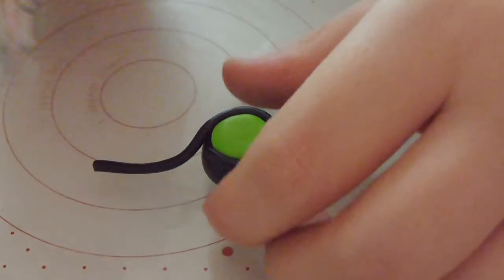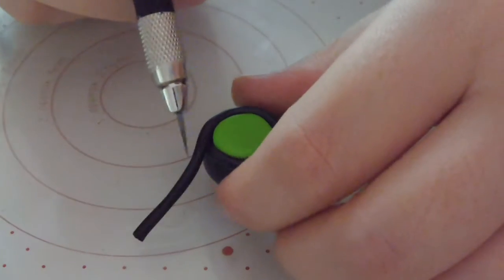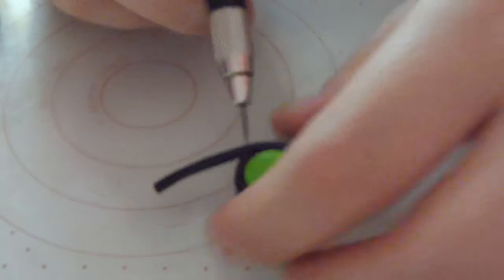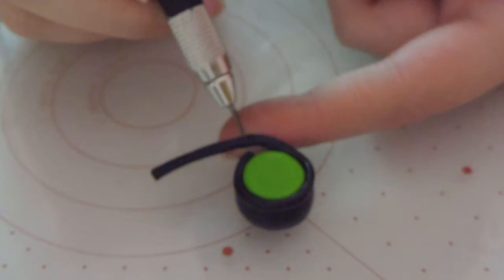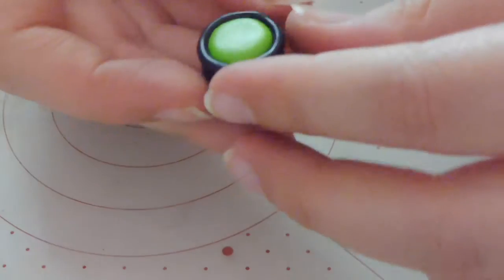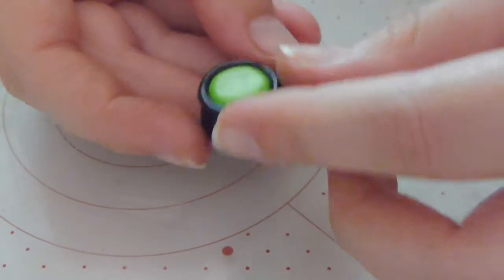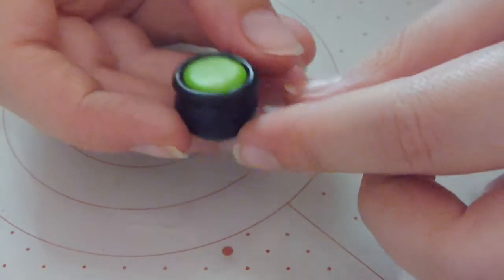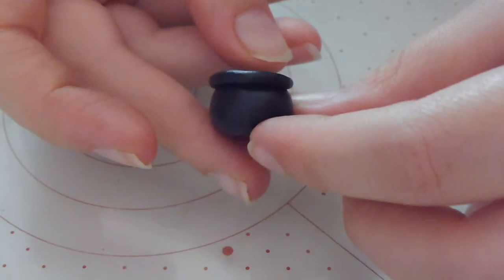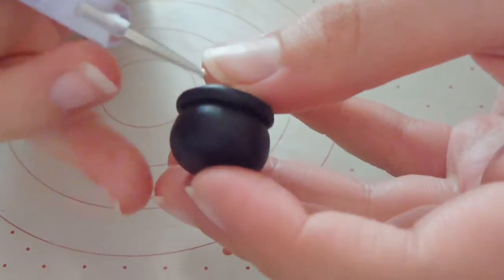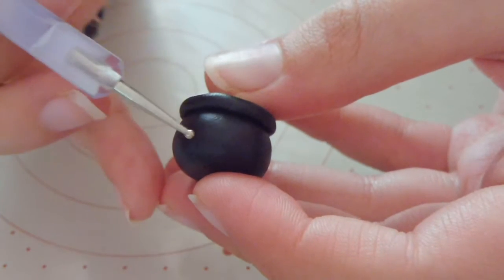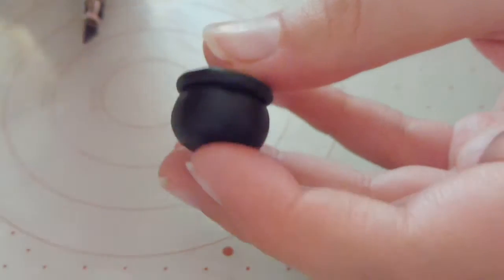Any excess can just be cut off with your exacto knife. Smooth out the little edge a bit and our cauldron is starting to look really cute. Next, I'm just going to make two indents on the front of my cauldron for the eyes.